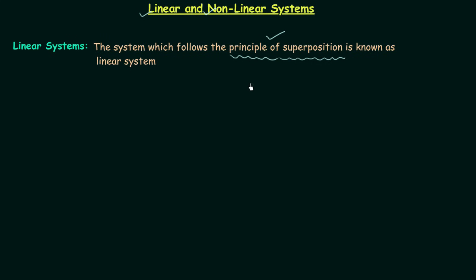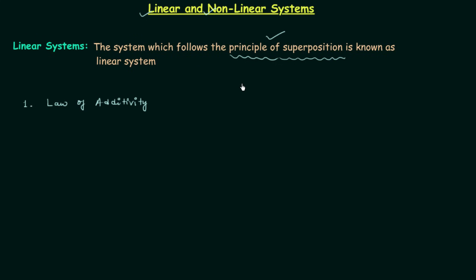If you can prove the system is following the principle of superposition, it is definitely going to be a linear system, because this principle is the necessary and sufficient condition. The principle of superposition is a combination of two different laws: the first law is known as the law of additivity and the second law is known as the law of homogeneity. The two laws combined form the law of superposition.